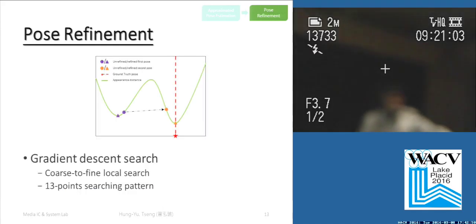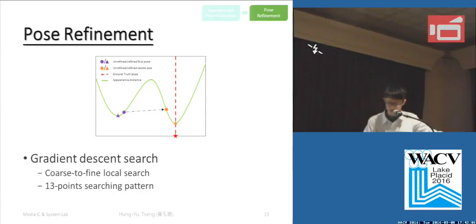The reason why we refine with two candidate poses can be explained in this figure. If the rough pose we get is the wrong ambiguous one, this pose refinement scheme enables us to jump out of this local minimum and reach the global minimum and finally get the correct estimation. Our gradient descent search is a coarse-to-fine local search with a 13-point searching pattern.